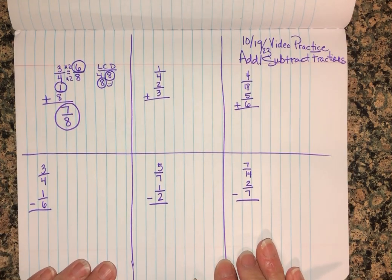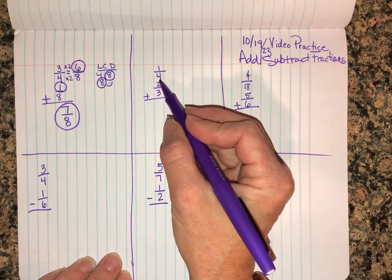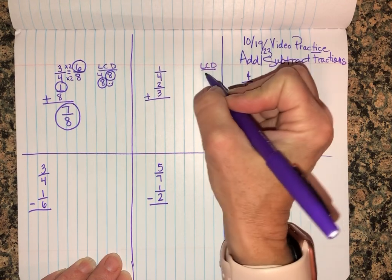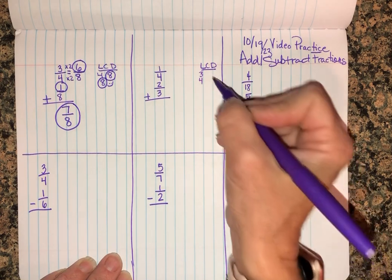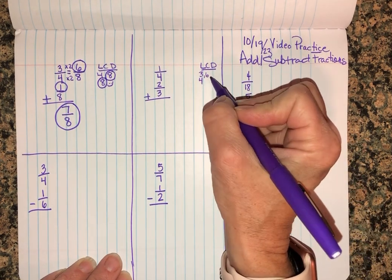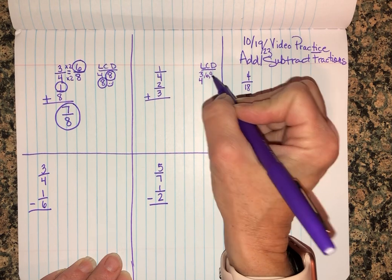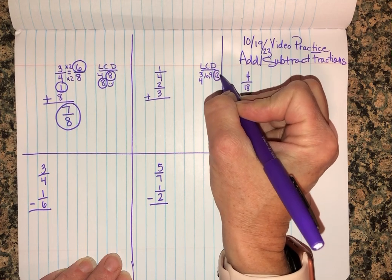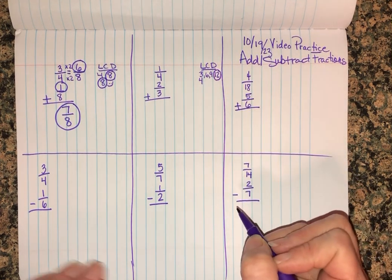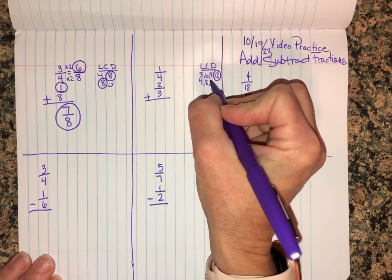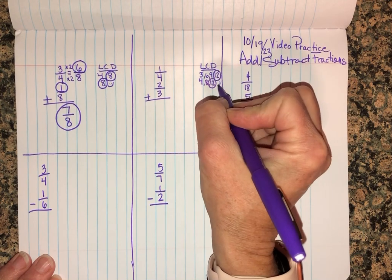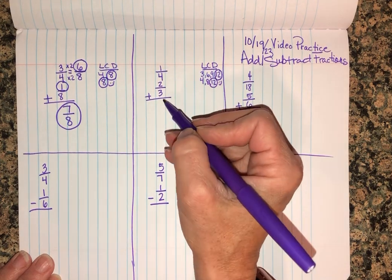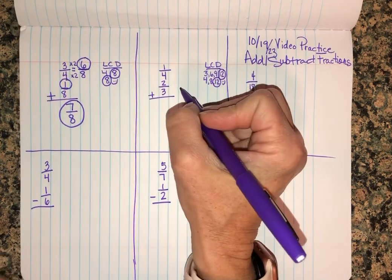On this next one I have one-fourth and two-thirds. I'm gonna find the LCD of three and four. Listing out multiples of three: three, six, nine - nope, still doesn't work with four. Twelve - ding ding ding, I know three times four is twelve so I can stop there. Four, eight, twelve - this is my LCD.